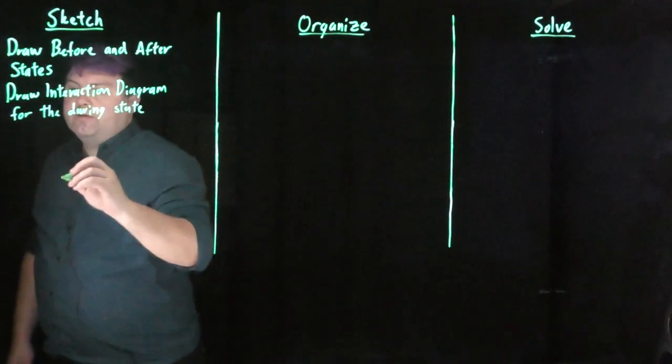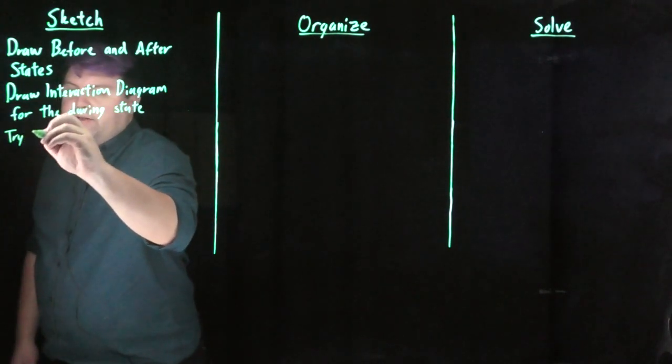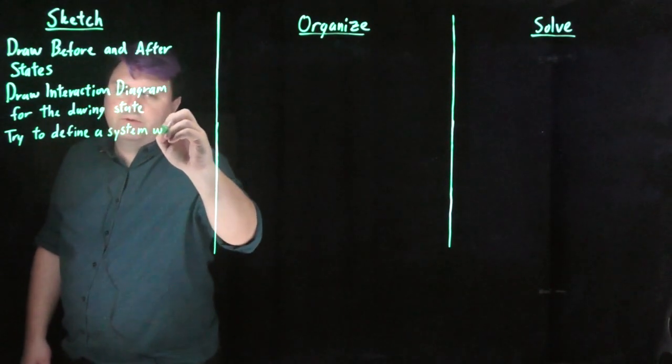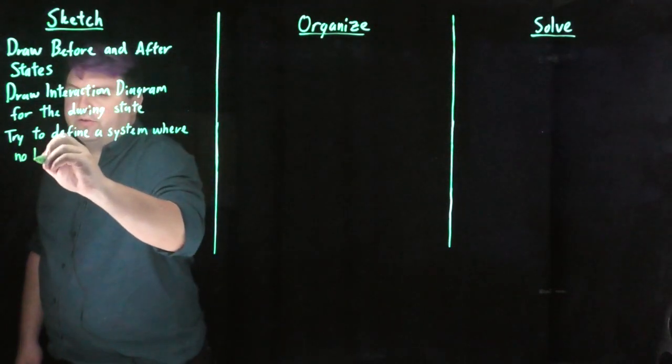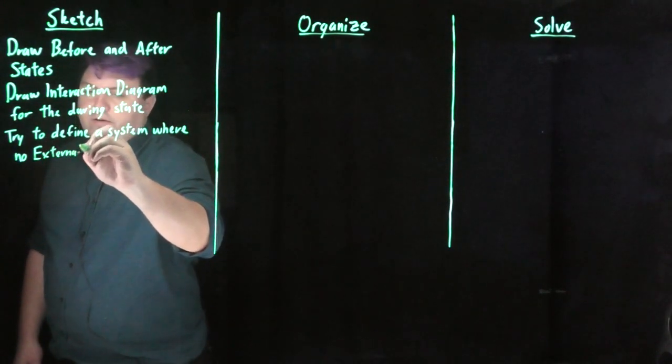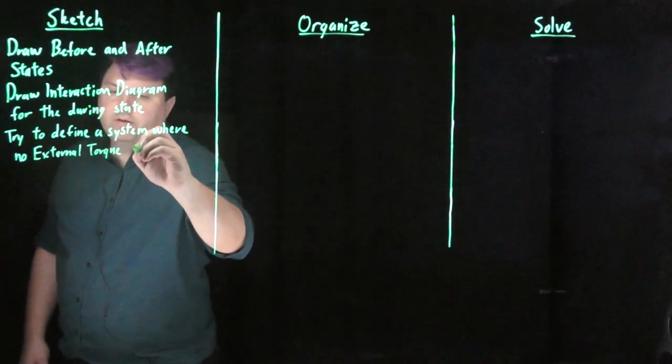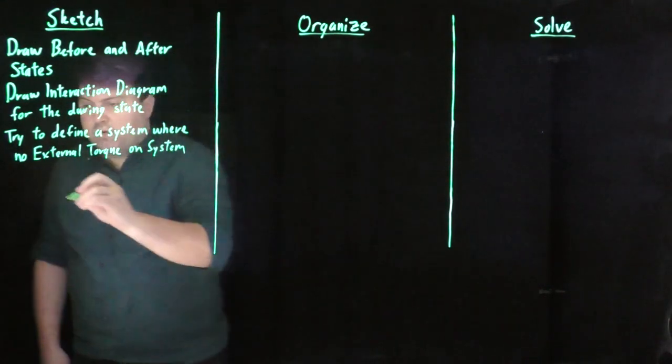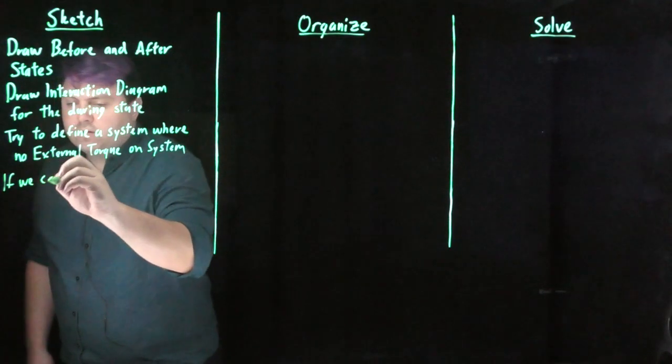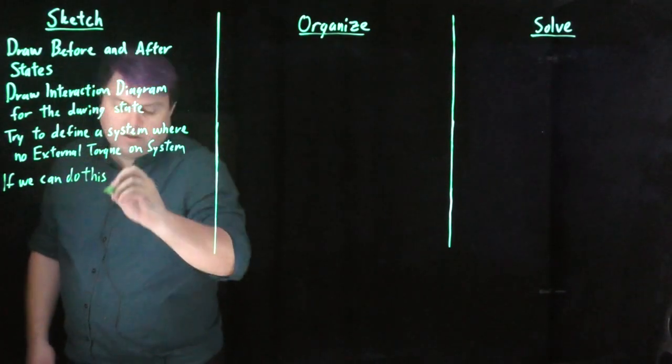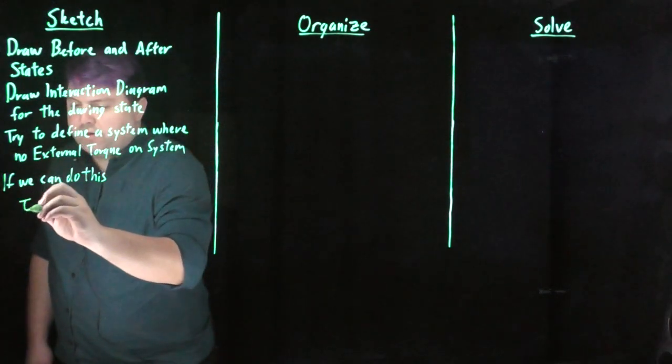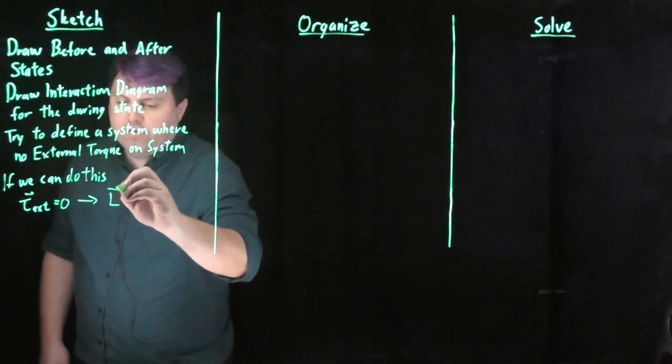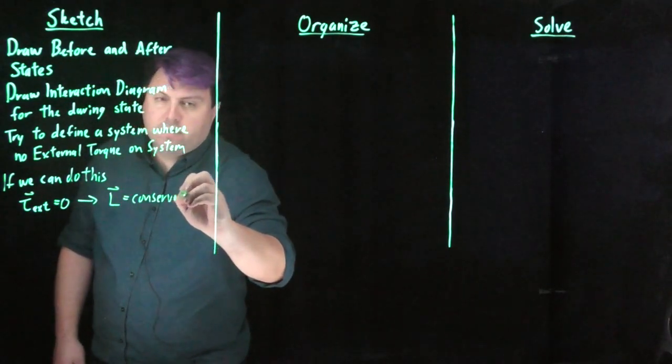And what we can do is we can try to define a system where no external torque on the system. So if we don't have any external torque, if we can do this, what this means is that our torque external is zero, therefore our angular momentum is conserved.